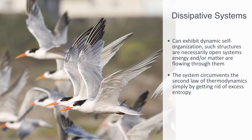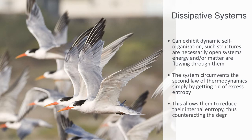Plants and animals take in energy and matter in a low entropy form as light or food. They export it back in a high entropy form as waste product. This allows them to reduce their internal entropy, thus counteracting the degradation implied by the second law. It is this dissipative, catabolic process within ecosystems that constantly produces disorder in the form of exported low-grade heat, that paradoxically makes possible the maintenance of order in the system through self-organization.